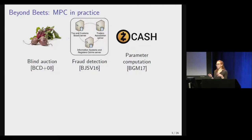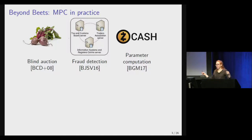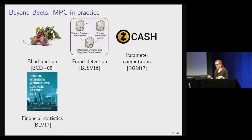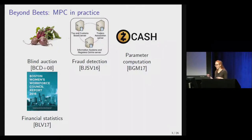The Zcash company wanted to produce new random parameters for their cryptocurrency, but they didn't want all their users to rely on a single entity to produce that randomness correctly. So they used MPC to collect randomness from over 90 different parties and produced parameters that verifiably used all that randomness, expanding the trust base. In Boston, the Boston Women's Workforce Council was studying the wage gap and convinced over a hundred companies to secret share their financial data about employees and their incomes, so they could study the wage gap from a huge dataset.